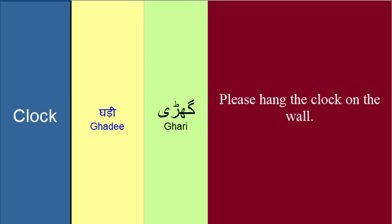Issi tarhaan, clock ko hum as a verb bhi use ker sakte hain. Agar time ke liye baat keroon, ke meinne 9 ghantay kaam kiya, toh mein uswak clock ka word as a verb use ker sakta hoon. Agar hum gaari peh ja rahe hain aur humne high speed 150 km per hour peh note ki, toh usko bhi hum kehenge ke humne 150 km per hour ki speed ko clock kiya. Toh kisi bhi cheez ko register kerna, note kerna, usko clock kerna keh sakte hain — khas tawah peh time ko, speed ko, ya pher jaisa apne faasla taah kiya, ke apne 10 km ka faasla clock kiya 20 minit mein.